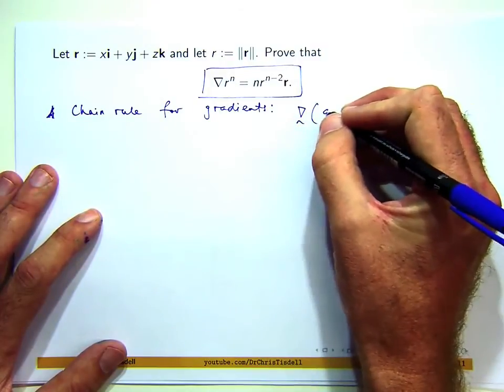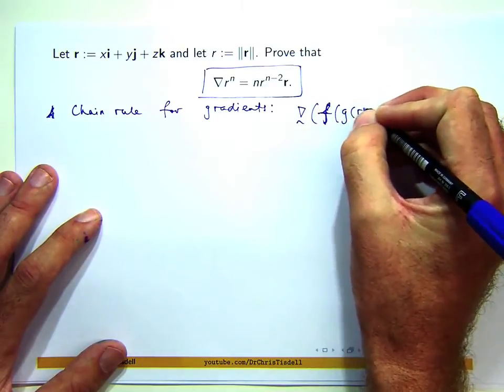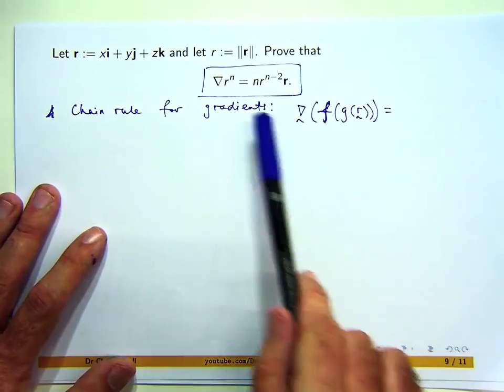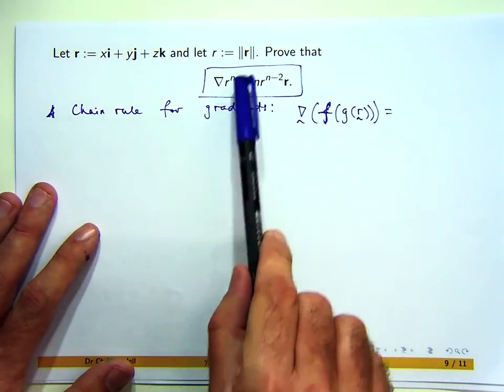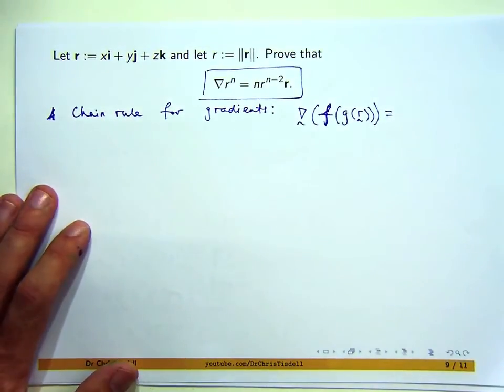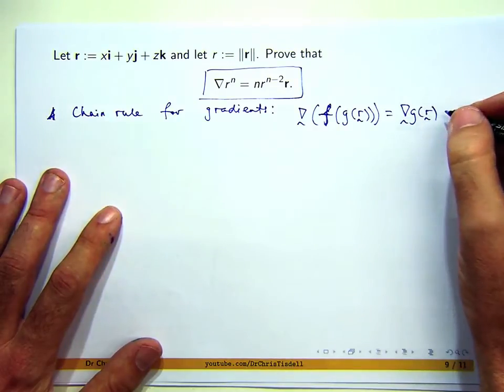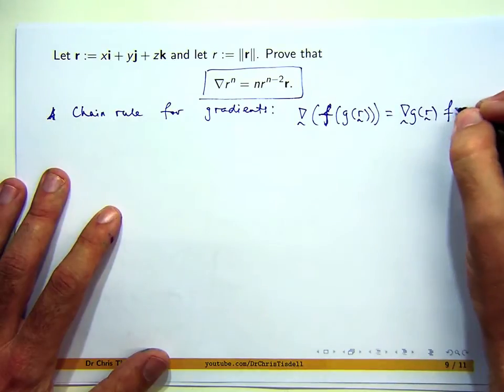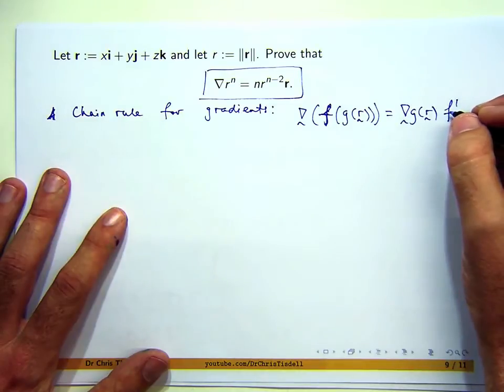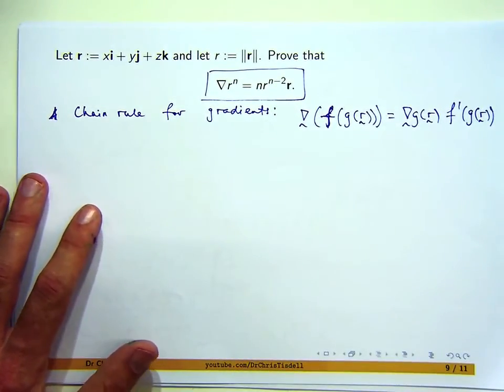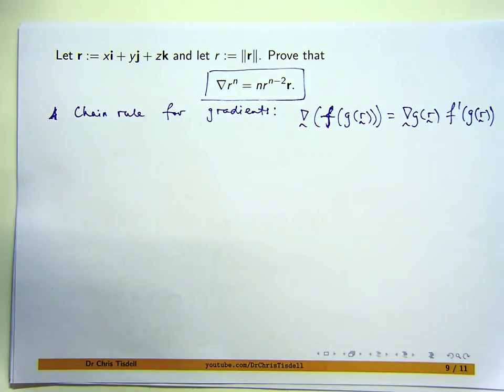So the chain rule for gradients, or grad, is the following. If I want to take the gradient of a function of a function, then how do I do it? So in this setting, I guess g would be this function here, and f would be the power function, power n. Well, you take the gradient of g, and you multiply it scalarily, by f dash.